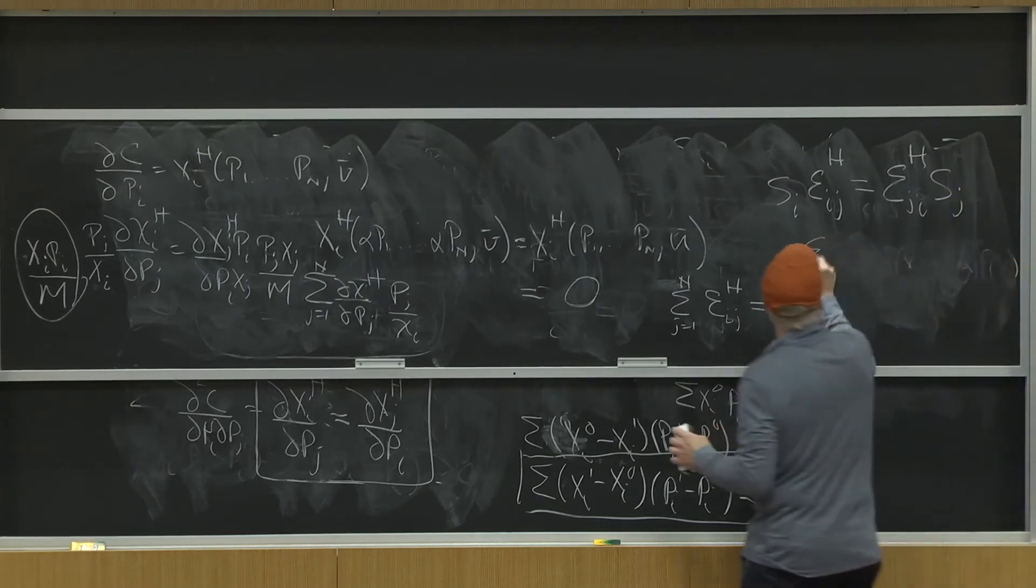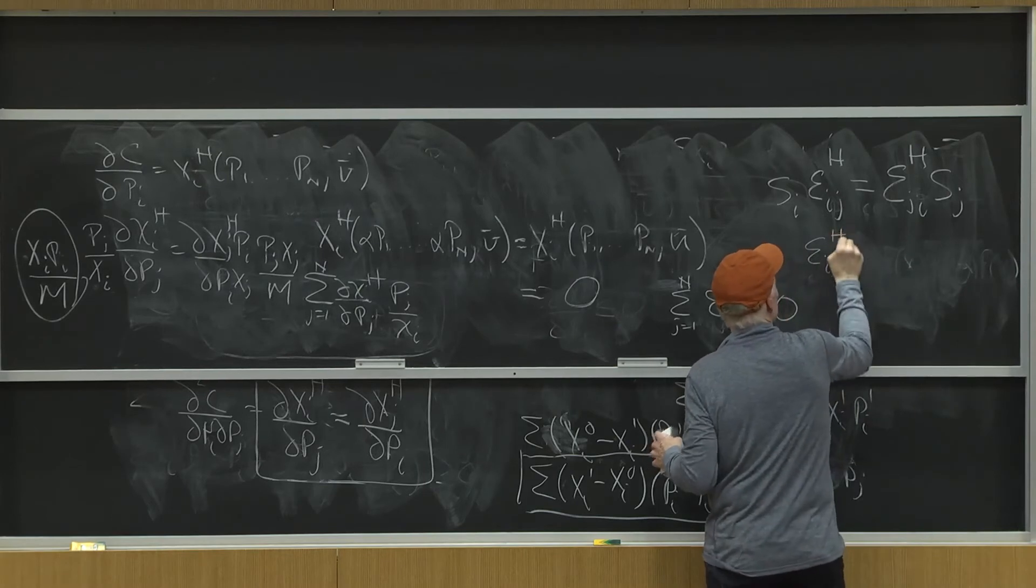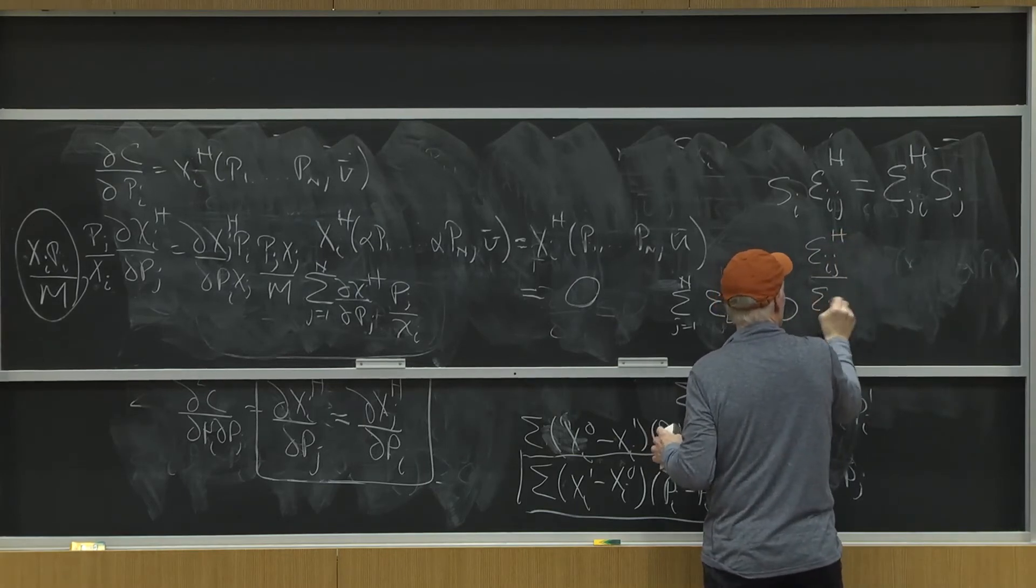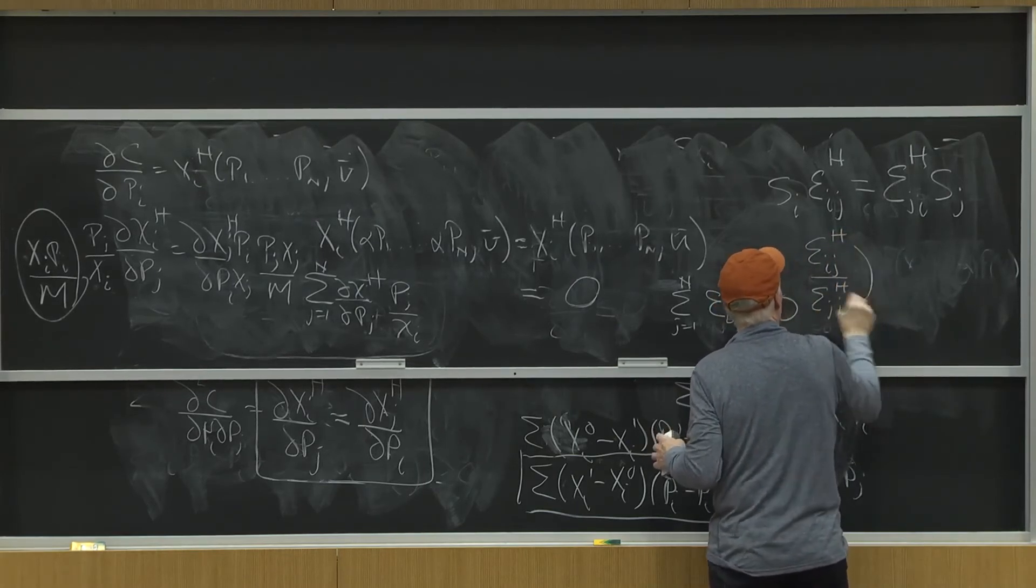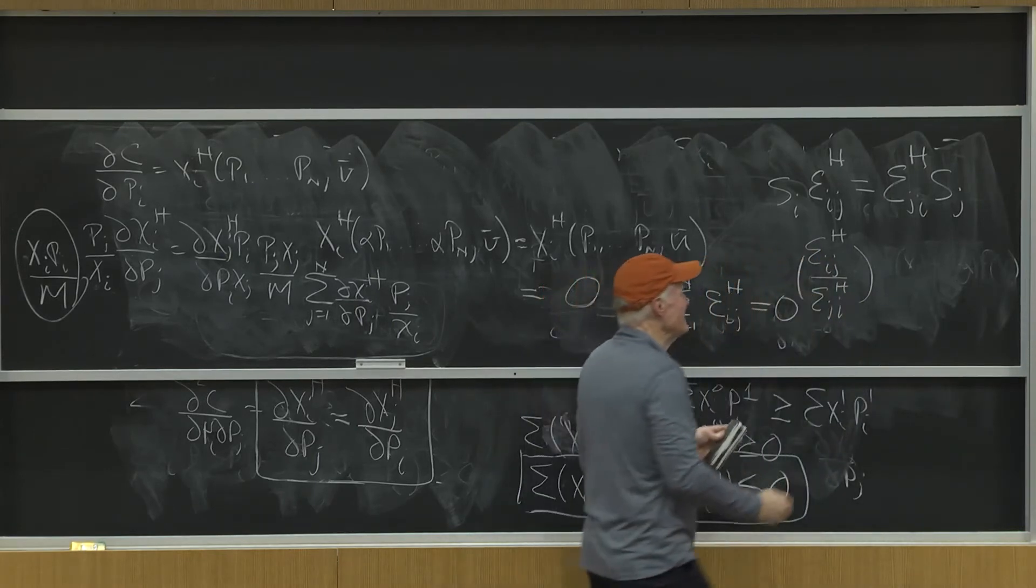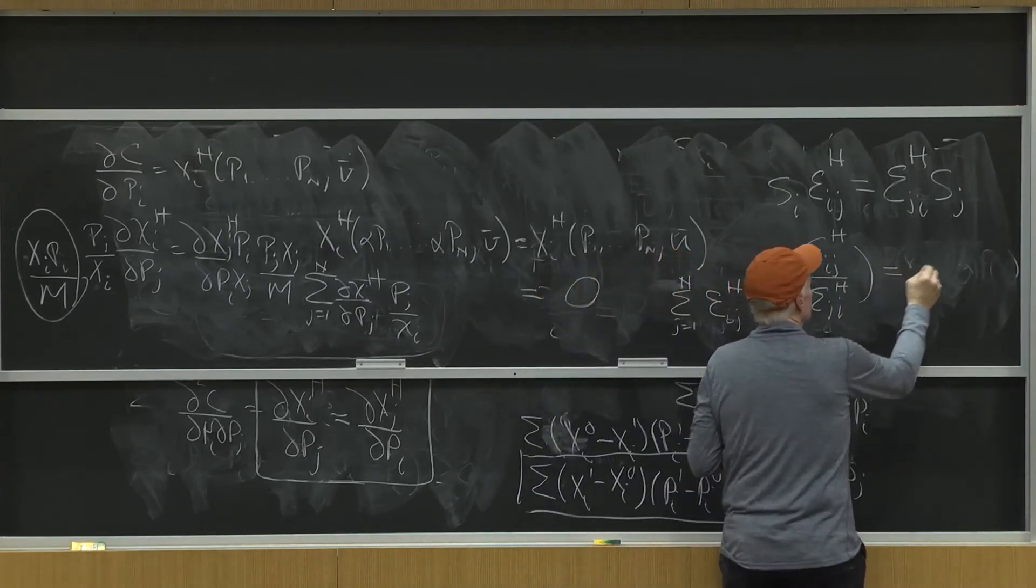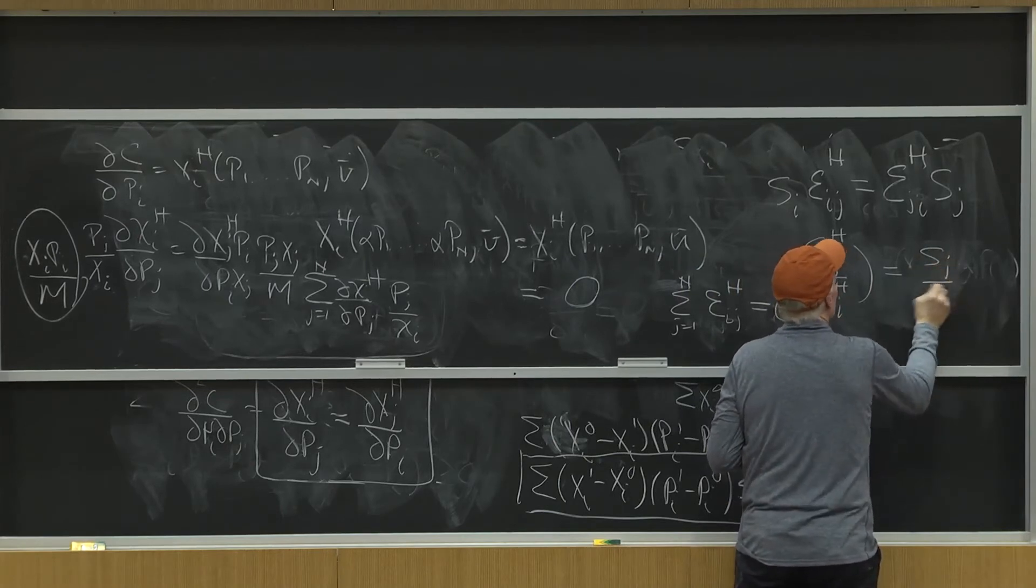Which means epsilon ijh divided by epsilon jih, that is the ratio with these cross-priced elasticities, is equal to s j over s i.